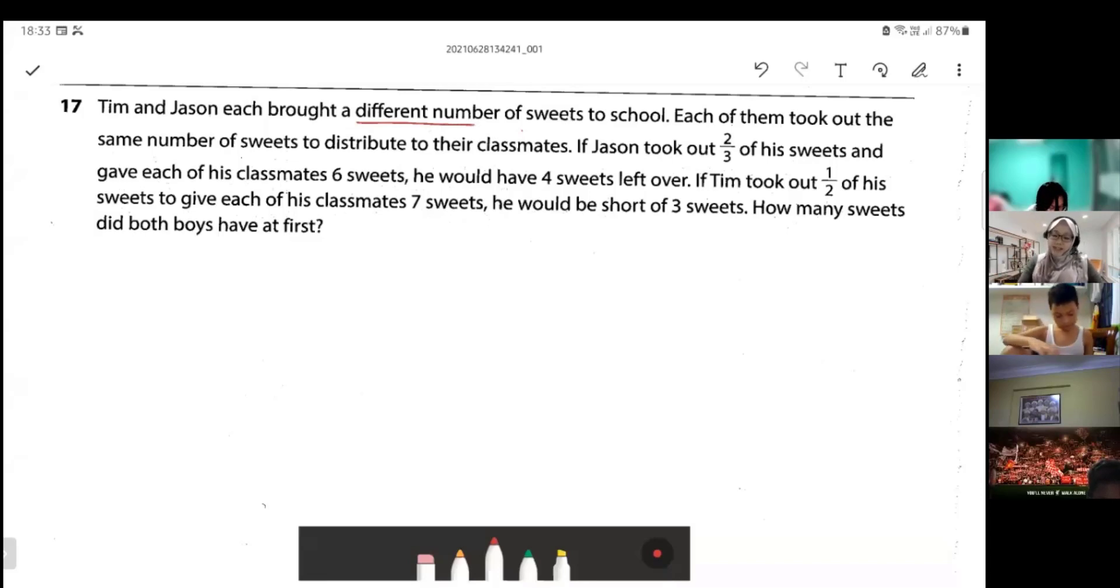Each of them took out the same number of sweets to distribute to their classmates. If Jason took out two-thirds of his sweets and gave each of his classmates six sweets, he would have four sweets left over.